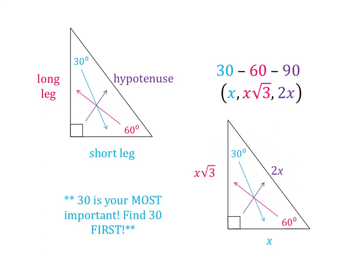Your 30-degree angle will be your most important angle because it is opposite the side x, and the side x is used to find your other leg and your hypotenuse. On every triangle, the first thing you should do is find your 30-degree angle.